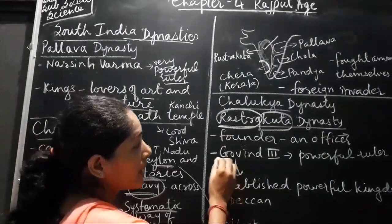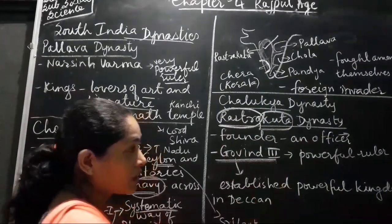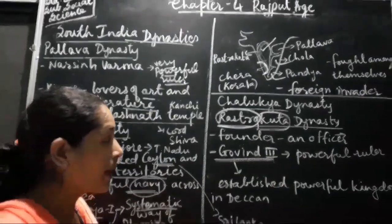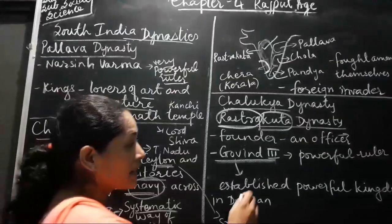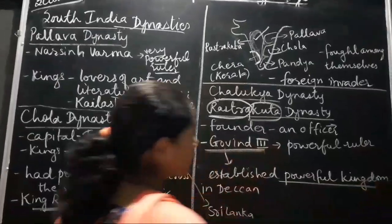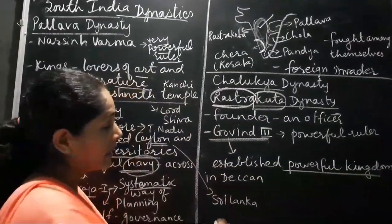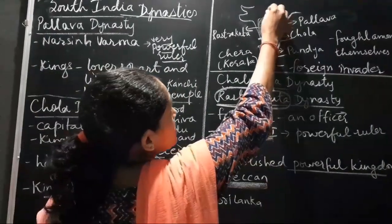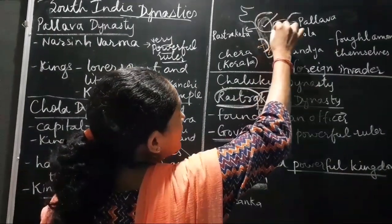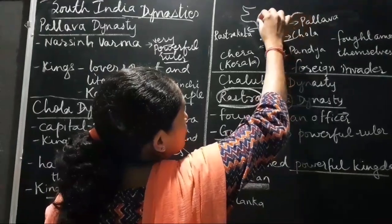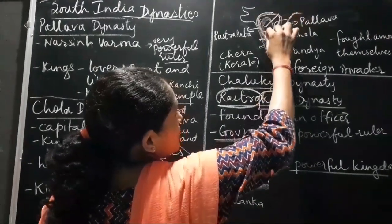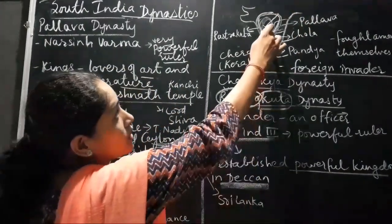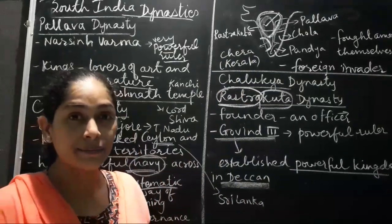In this dynasty, we had Govinda III who was the most powerful ruler and he established a powerful kingdom during his reign in the Deccan area. This is all Deccan region, and he had conquered over this area.